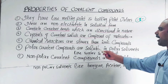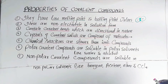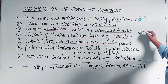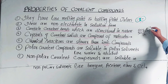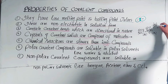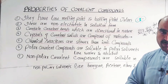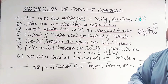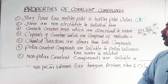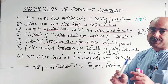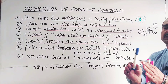Property number five: chemical reactions of covalent compounds are slower than those of ionic compounds. For ionic compounds, reactions are fast — for example, sodium chloride dissolved in water ionizes quickly, and when mixed with silver nitrate solution, a very fast reaction occurs. For covalent compounds, the covalent bond must first break before new bonds form, requiring proper temperature, pressure, and catalyst, making reactions time-consuming.